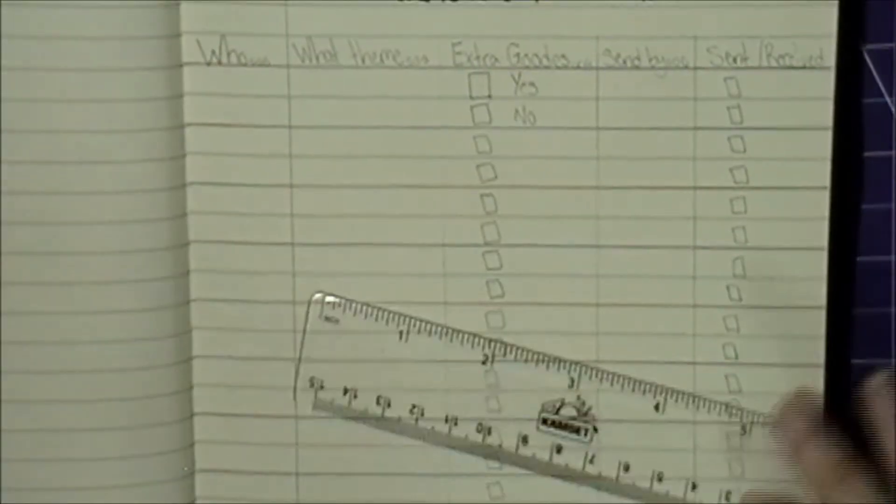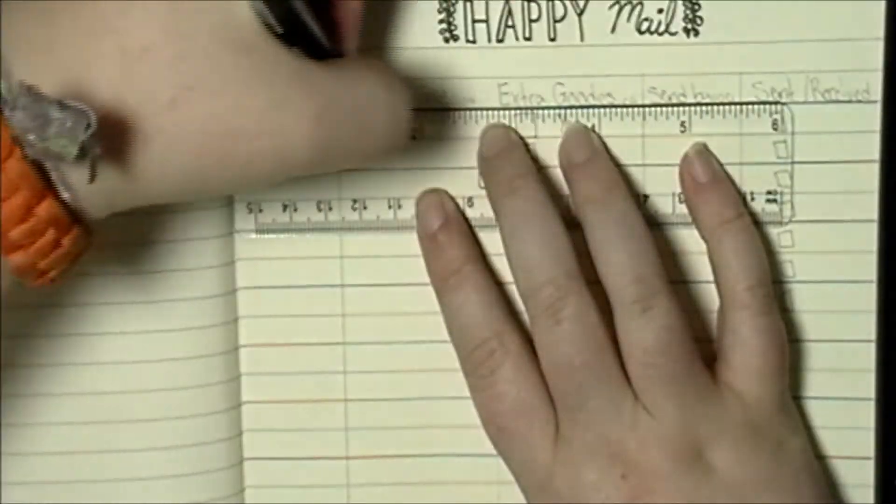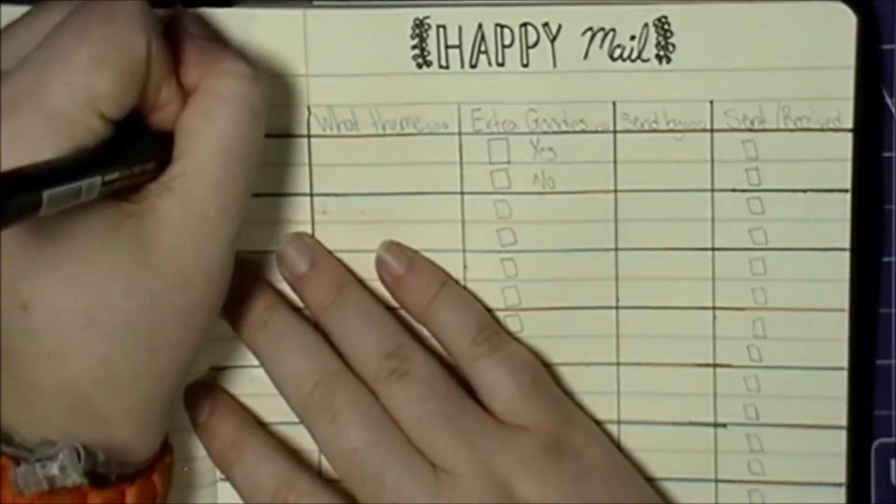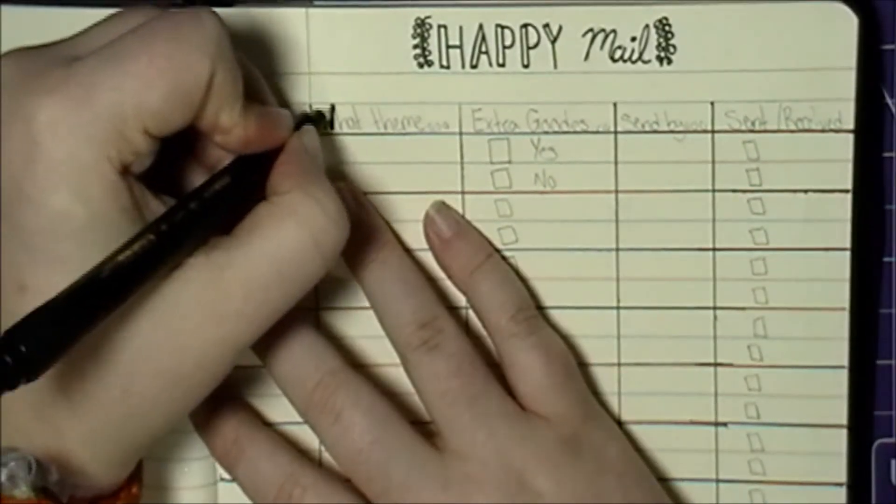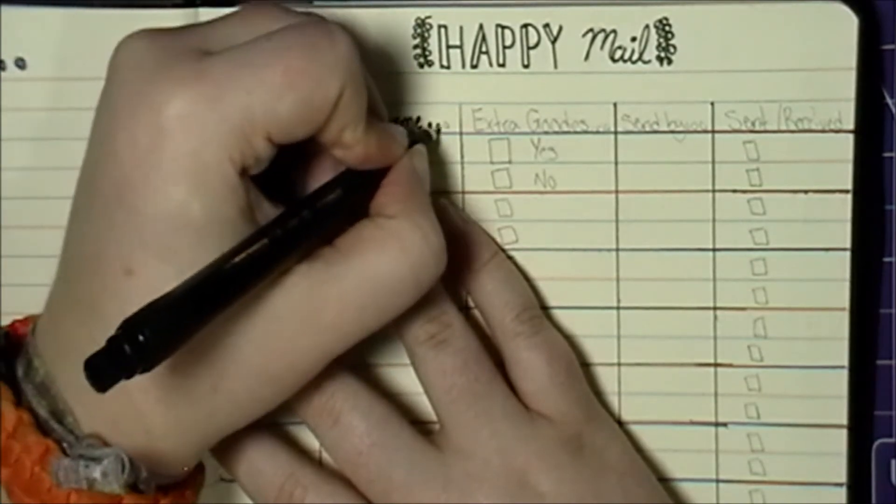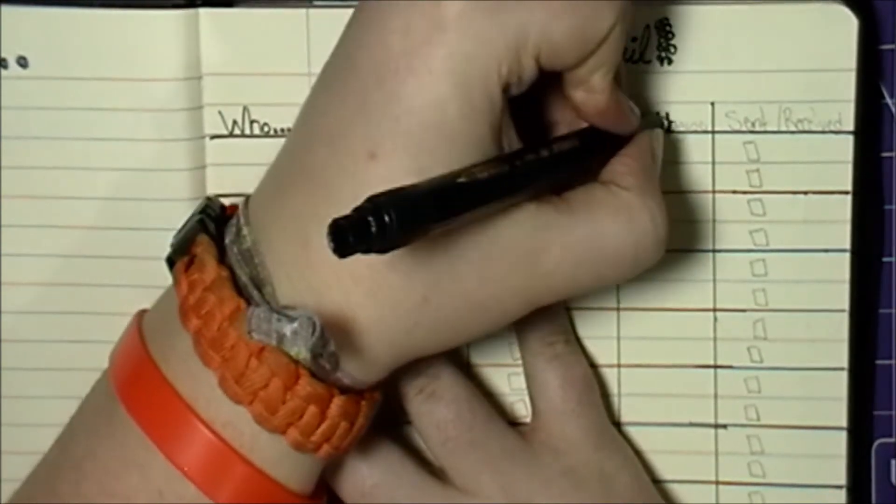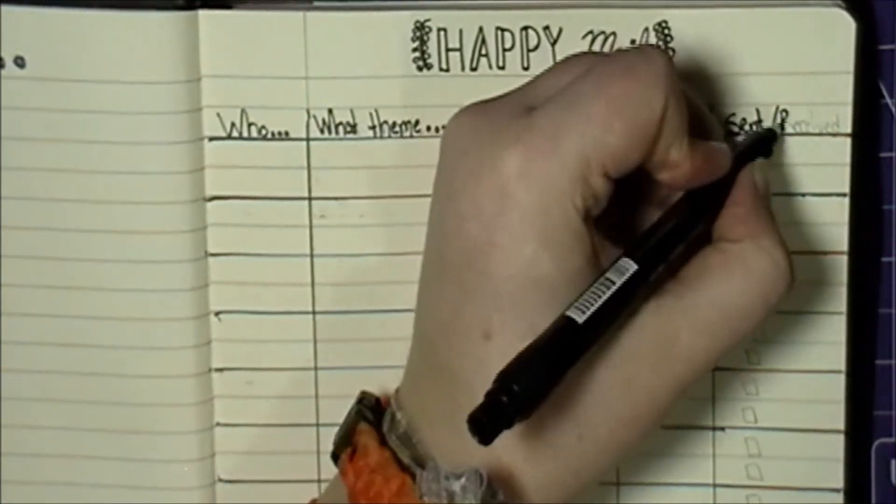And now this page is a happy mail tracker. I have one in my other bullet journal and it's not completely used up, but this is a happy mail tracker for the whole year and not just like a month, so I will need a new one anyway, so I figured I'd just go ahead and write it out.